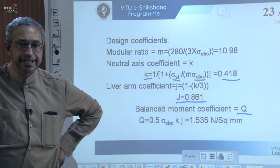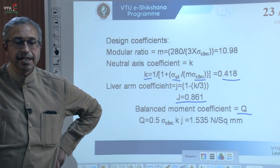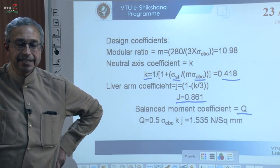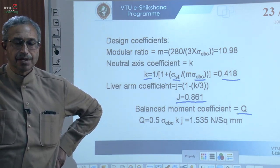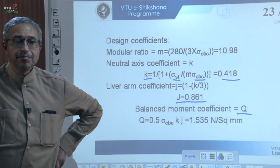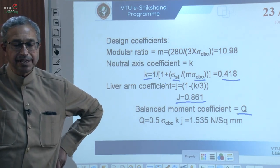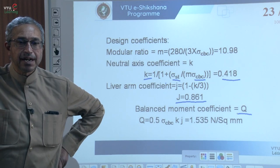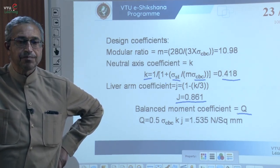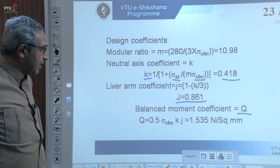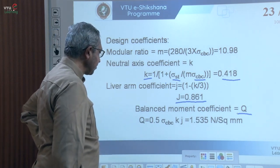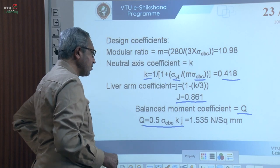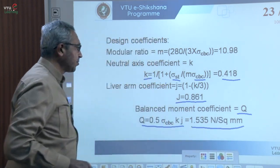The balanced moment coefficient Q is calculated as 0.5 times sigma CBC times K times J. On substituting the values, the balanced moment coefficient Q is obtained as 1.535 Newton per square millimetre.